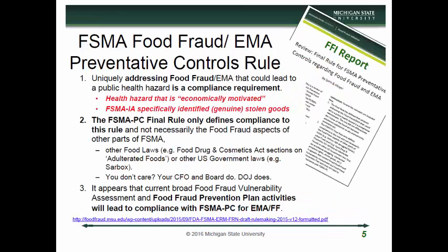Looking at the preventive controls rule: uniquely addressing food fraud and EMA that could lead to a public health hazard is a compliance requirement. If there is that potential, you've got to deal with it — it's crystal clear. A health hazard that is economically motivated covers not just a substance for economic gain, but any type of activity that leads to a hazard. Later in the IA rule, they specifically identified genuine stolen goods that create an agent causing a hazard as definitely covered. The FSMA PC final rule only defines compliance to this rule and not necessarily the food fraud aspects of other parts of FSMA — you can be PC compliant but not compliant with other parts of FSMA.